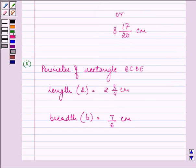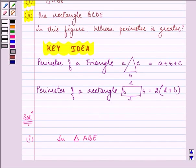So what we need to do is we need to apply the formula that we learnt in our key idea. That is, perimeter of a rectangle is 2 bracket length plus breadth.